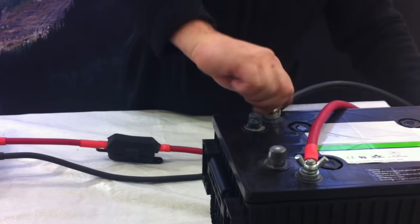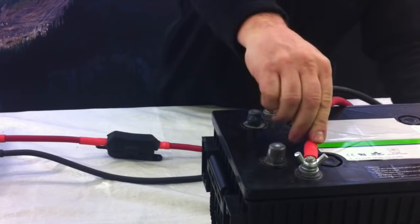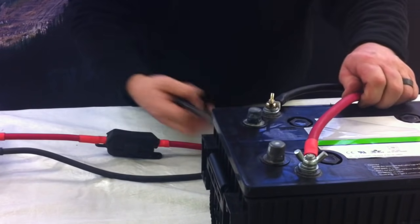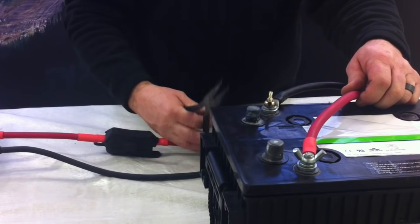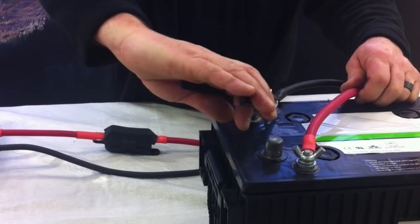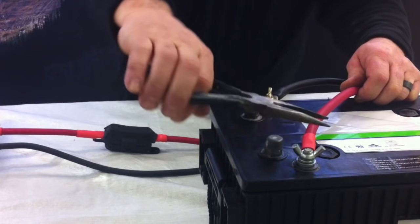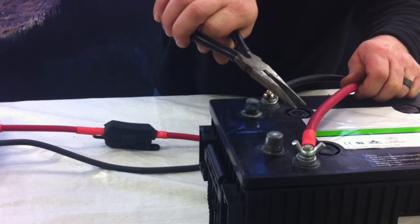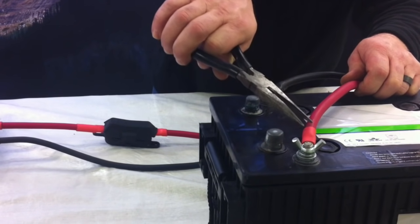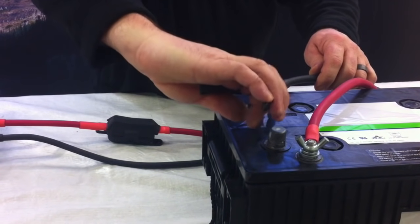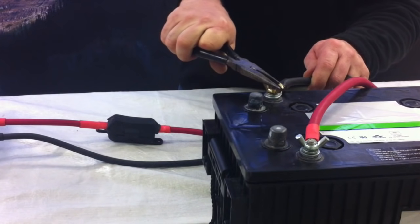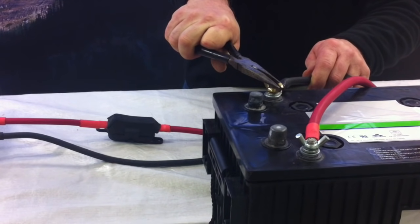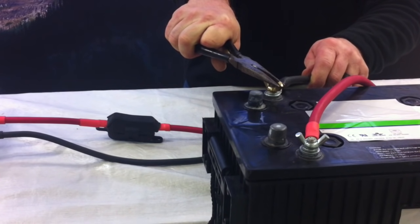So the reason I say you want to put the positive cable on first, if I was doing this in a tight location and I was to go ahead and turn the positive wing nut and come in contact with the chassis, I would have a short. This way, if I'm over here doing the wing nut here and I come into contact with the chassis, nothing's going to happen. Just a little tip.